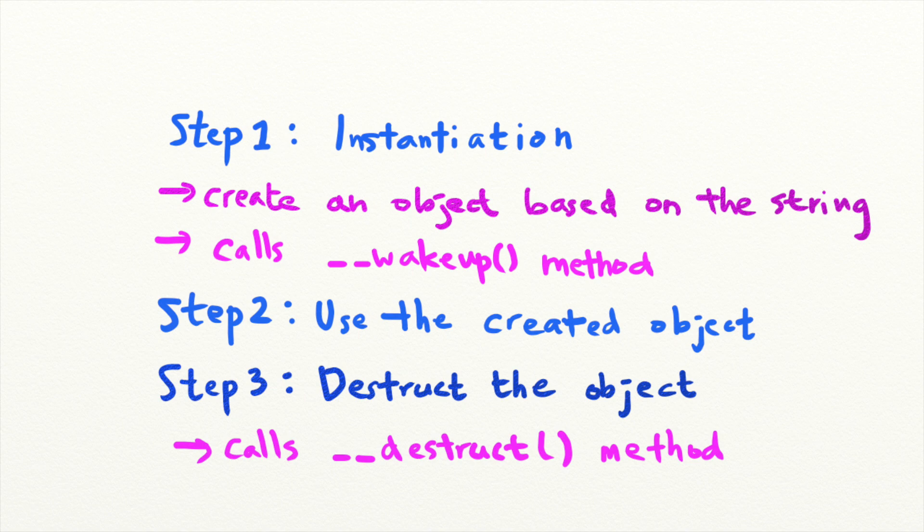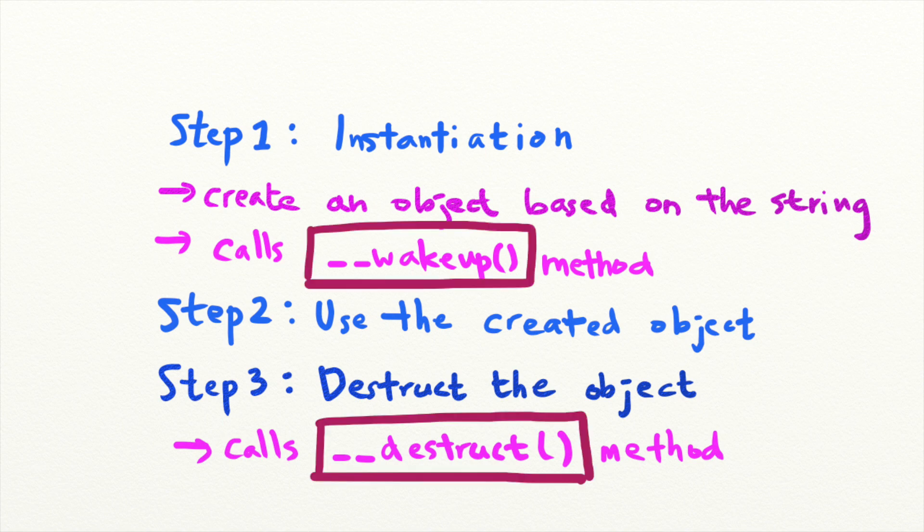So how can you manipulate an object to execute arbitrary code? When you control a serialized object that is passed into unserialize, you can control the properties of the created objects. That means that you could also control the values passed into automatically executed methods like wakeup or destruct.